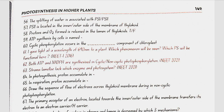ATP synthesis by cells is called phosphorylation. Cyclic phosphorylation occurs in the stroma lamellae component of the chloroplast. At a wavelength of 690 nm, the red drop effect will be seen and PS1 will be functional. Both ATP and NADPH are synthesized in non-cyclic photophosphorylation. Stromal lamellae lack NADP reductase and PS2.